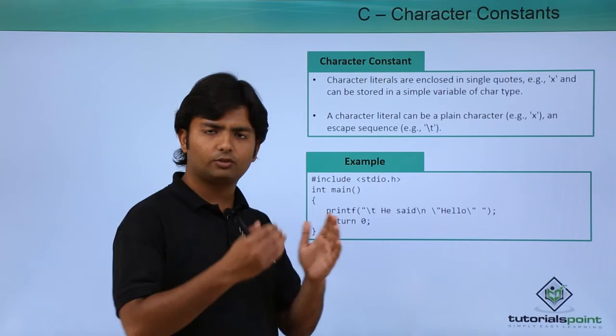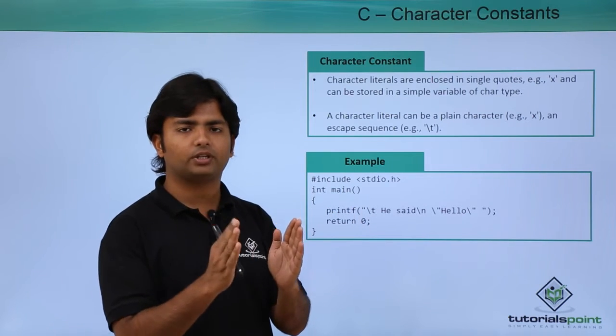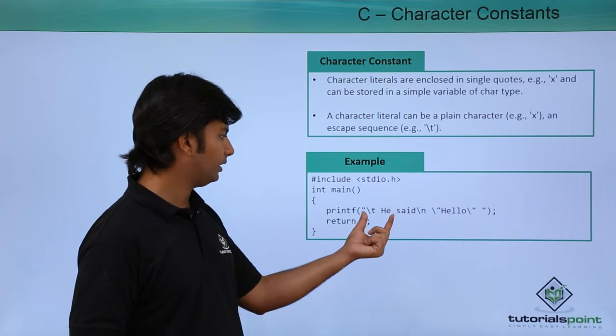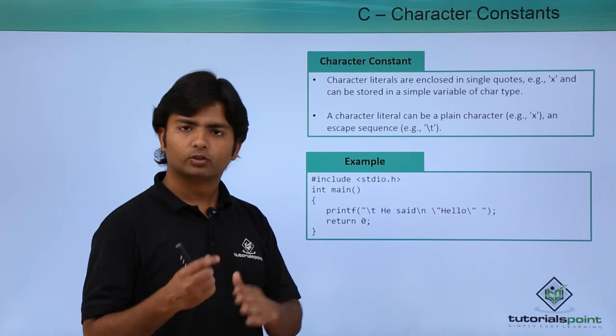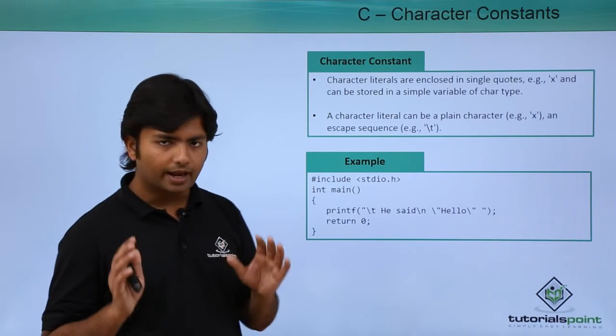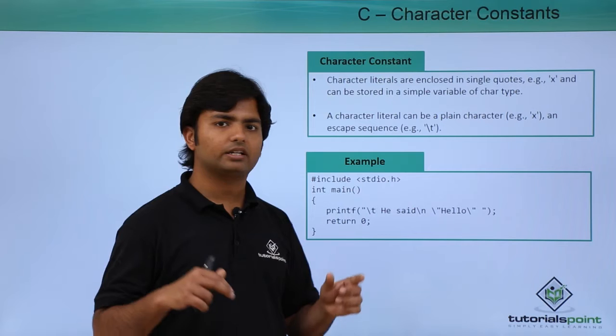the slash T, so in the very beginning it will give a tab space in the output, and then the text will be like normal text. Slash n is for the new line, and if I want to print double